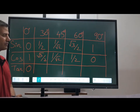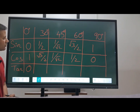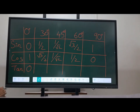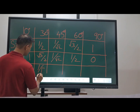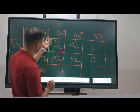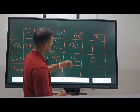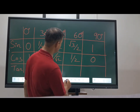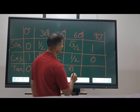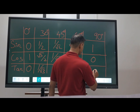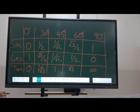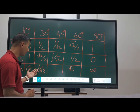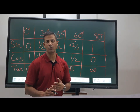Now let's see the range of tan from 0 to 90 degrees. Tan 0 = 0, tan 30 = 1/√3, tan 45 = 1, tan 60 = √3, and tan 90 is undefined (infinity). So the tangent ranges from 0 to infinity in the first quadrant, that is from 0 to 90 degrees.